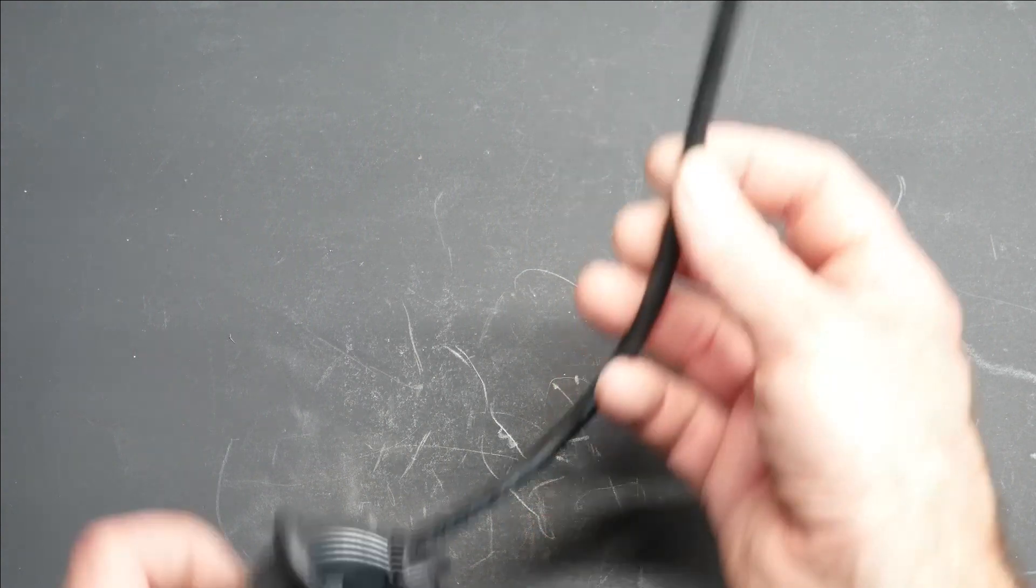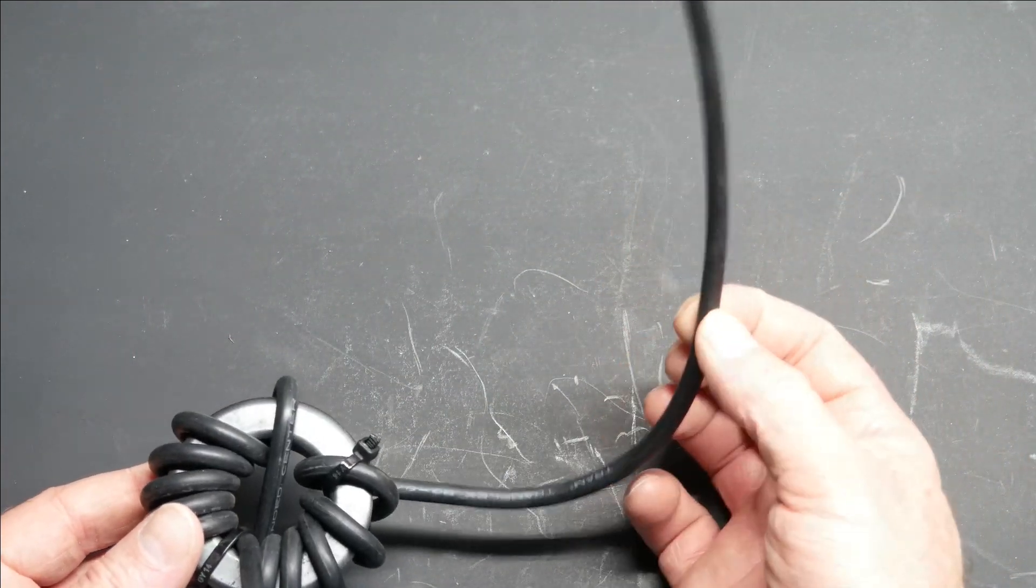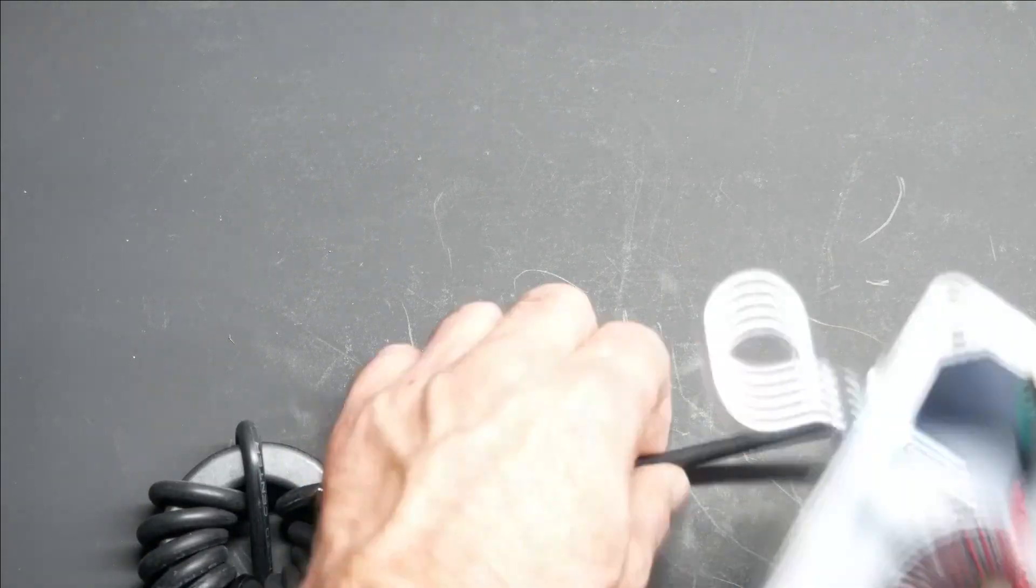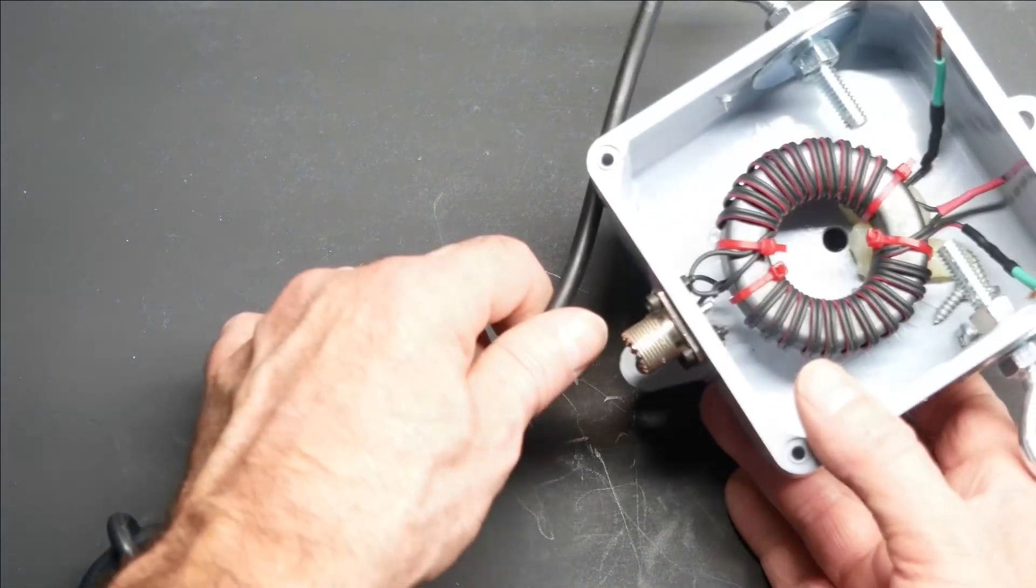And what we'll do is we'll just trim this a little shorter, and we'll put a PL259 on the end of this, and this will go onto the bottom of our balun box, like so.